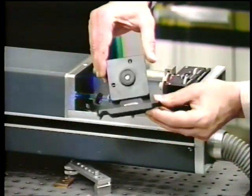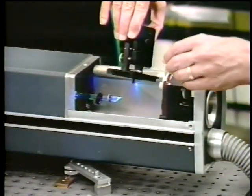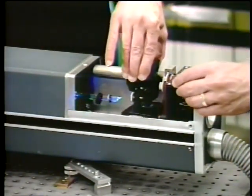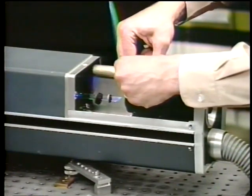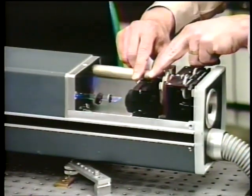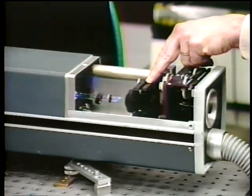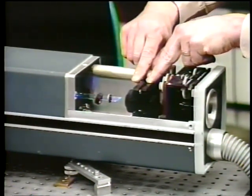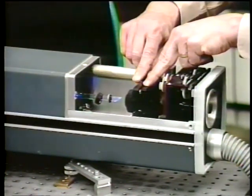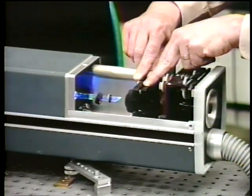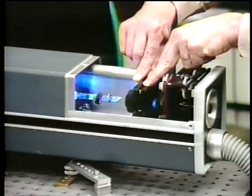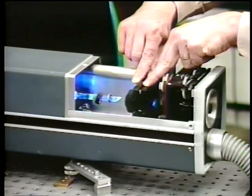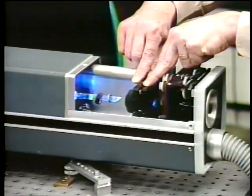So now I'm going to place the etalon inside the laser cavity. There's a little space here between the Brewster window and one of the mirrors. So here we are, here's the etalon in place, and all I have to do now is adjust the alignment. And here we are now, we get lasing. And now we're ready to go and look at the output of the spectrum analyzer with this etalon in place.